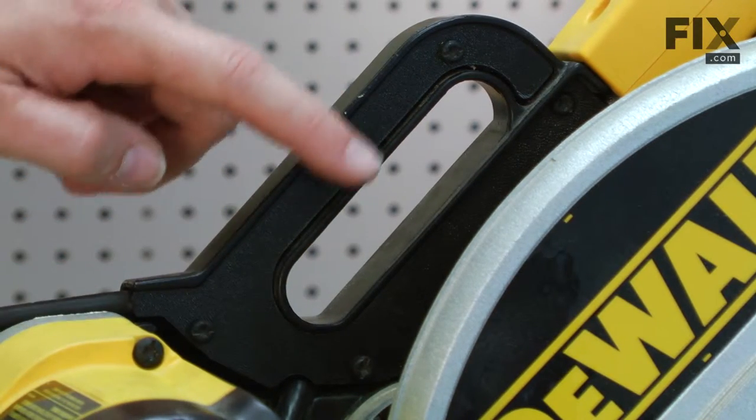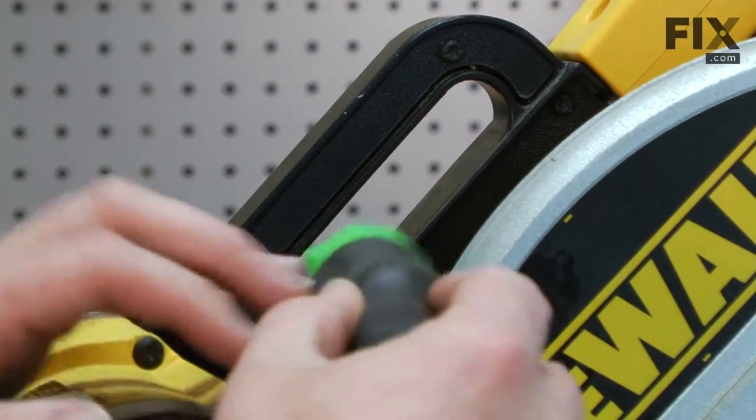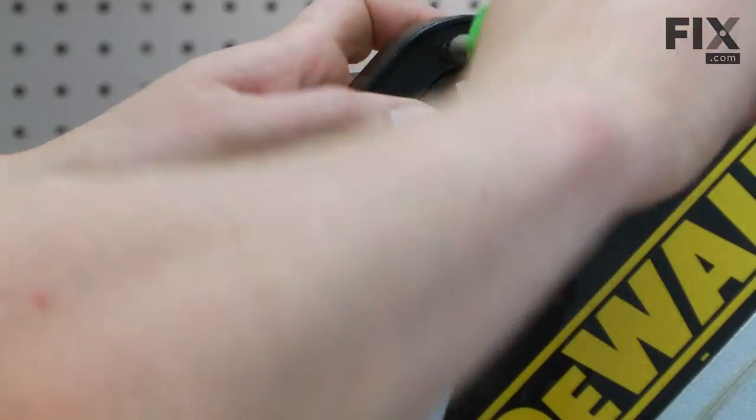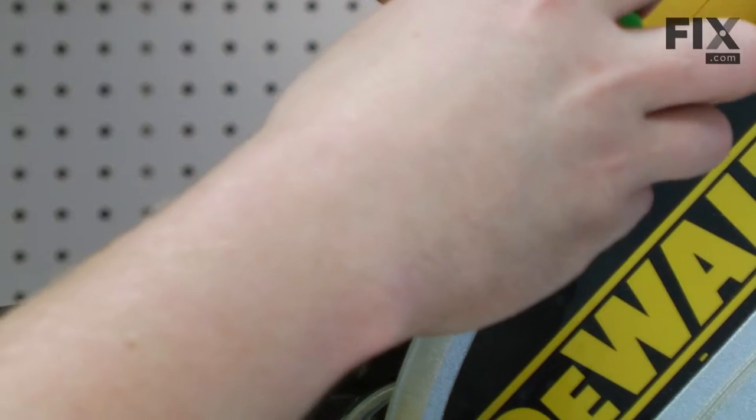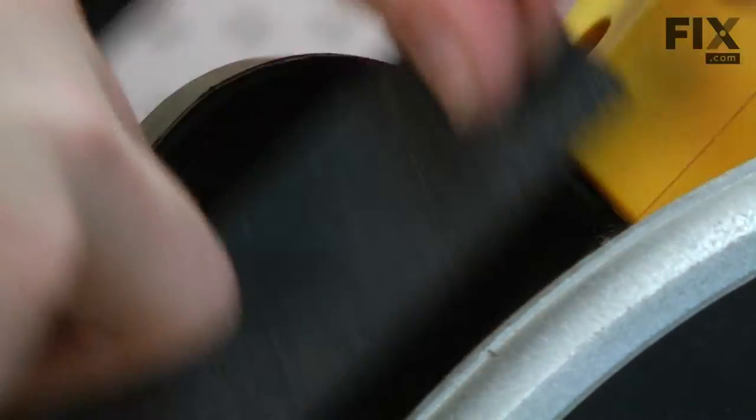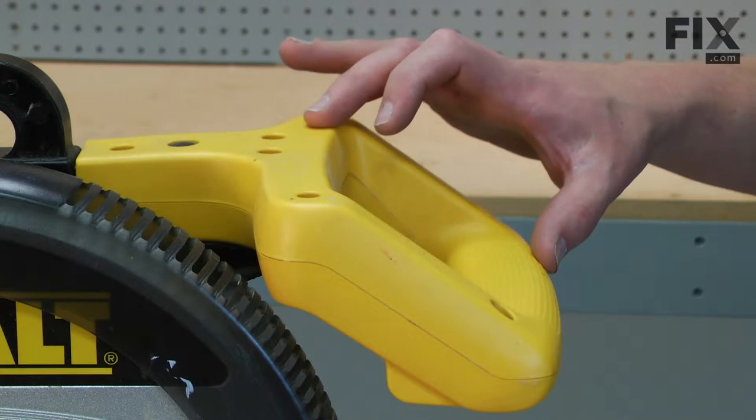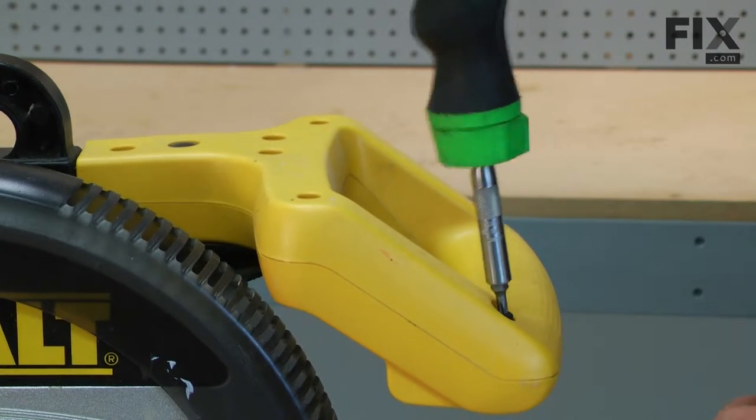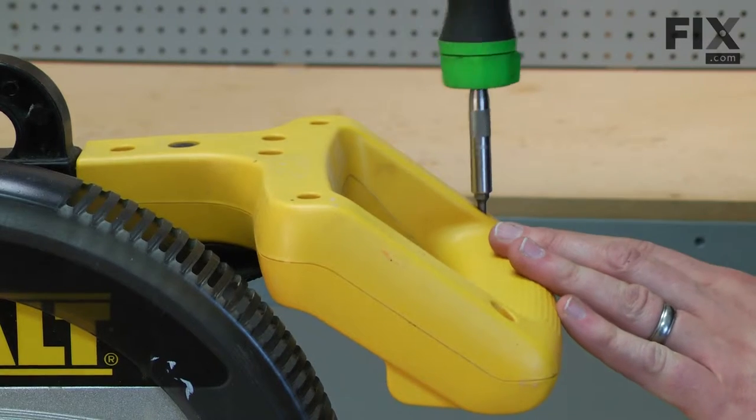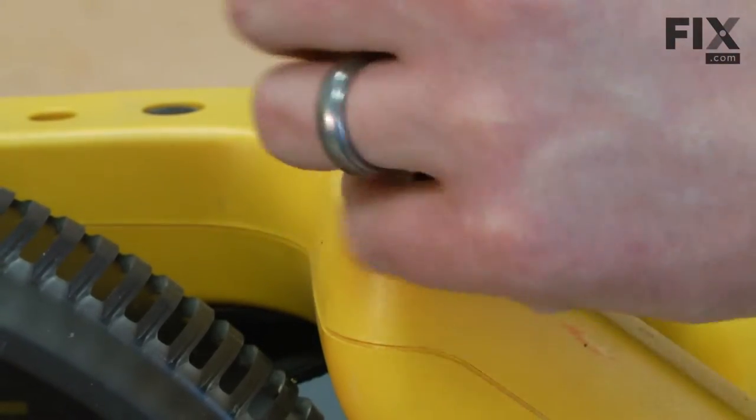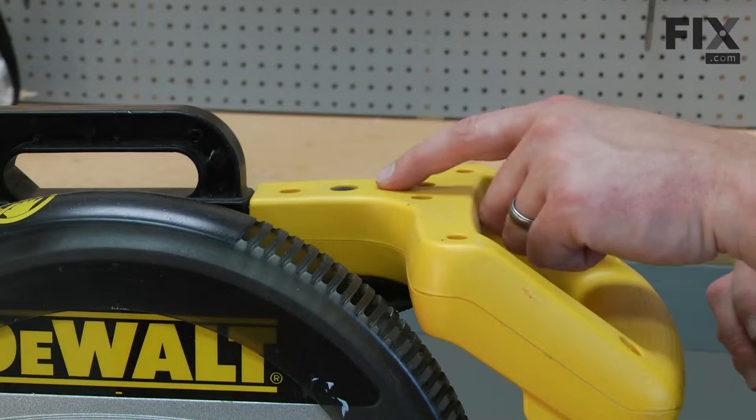The cord passes through the upper handle and is underneath this cover. I'll remove it next. Next, I'll remove the top half of the front handle, starting with these four screws. Now, the three screws at the rear of the handle.